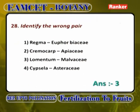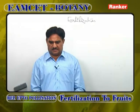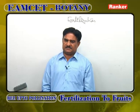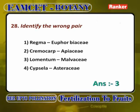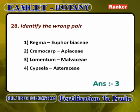Identify the wrong pair. Regma is found in Euphorbiaceae — correct. Cremocarp is the fruit of family Apiaceae — correct. Lomentum is not found in Malvaceae — it is found in Mimoseae. Malvaceae shows either schizocarp or loculicidal capsule. Cypsela is the fruit of family Asteraceae. The wrong combination is Lomentum in Malvaceae.